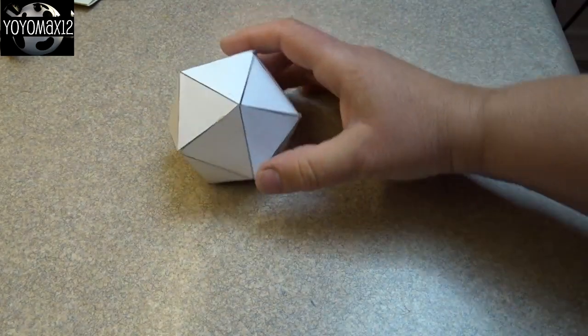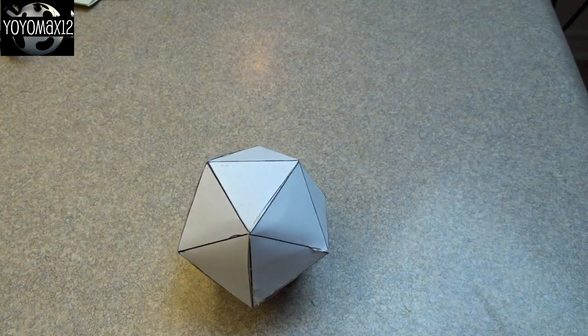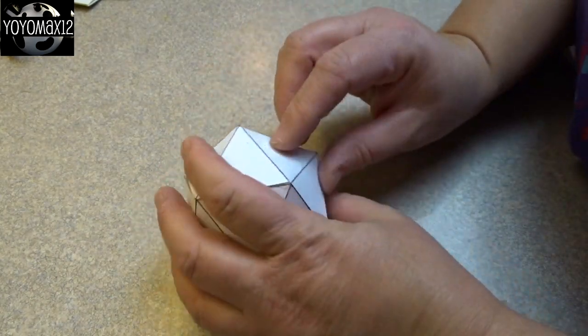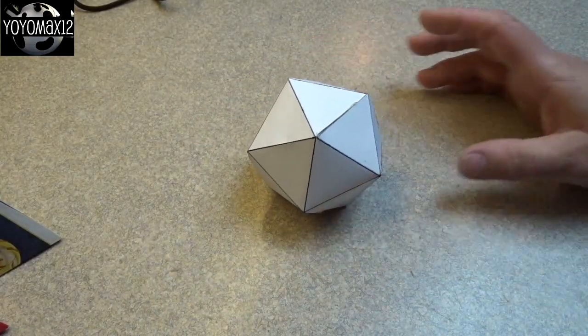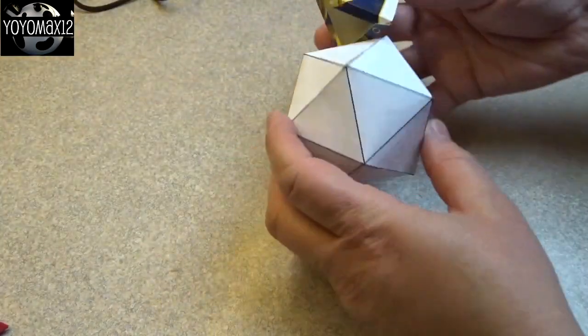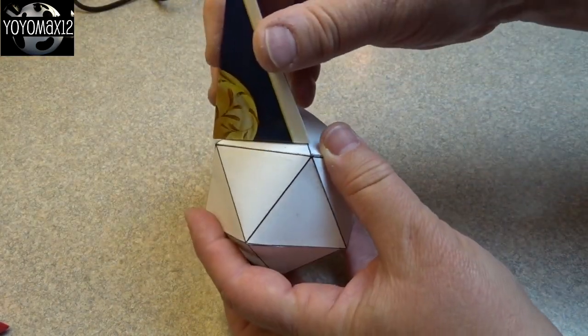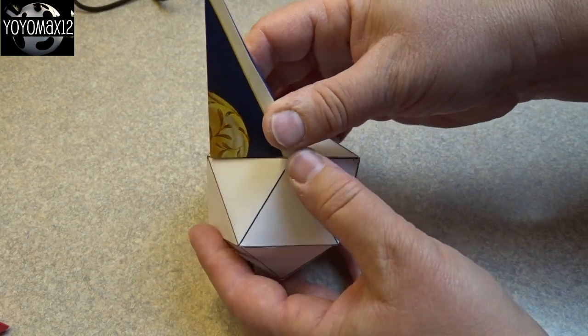It's like a ball but it has facets like a gem or like a Dungeons and Dragons die if you know what I'm talking about. Each one of those little triangles that you see on the face of the center is going to hold one star point. That's why we need 20 of them.